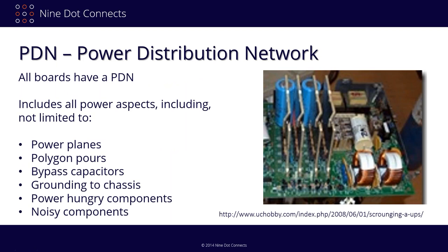PDN — power distribution network — is a relatively new term. I've also seen it used as 'power distributive network.' ICD's Barry Olney uses it quite often in his articles. The power distribution network is something we've always had — basically our power and ground — but we've got to look at it from a very different perspective in high-speed design, because everything involved has the potential to cause or be impacted by noise.